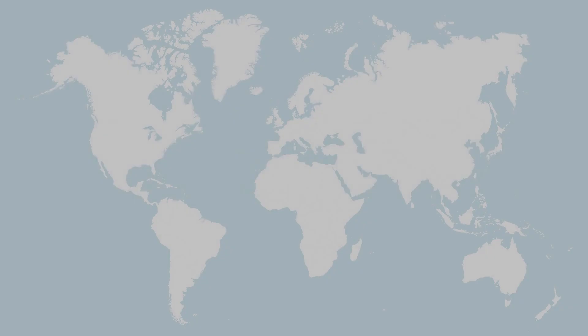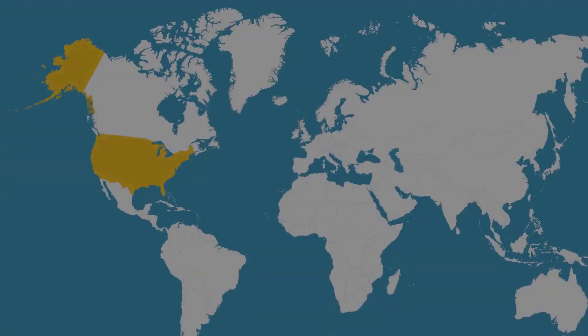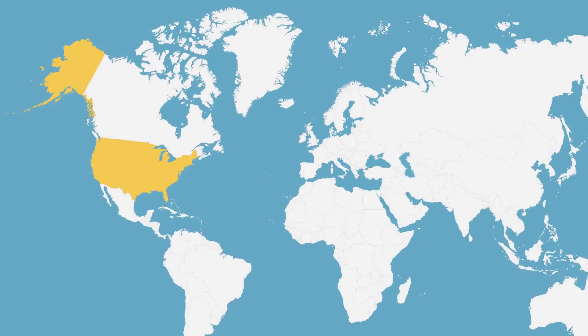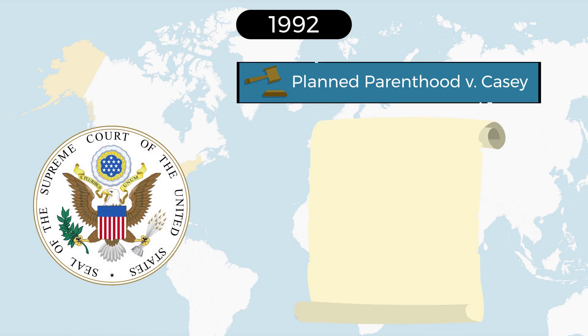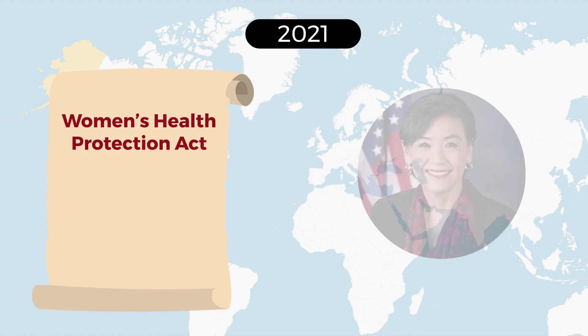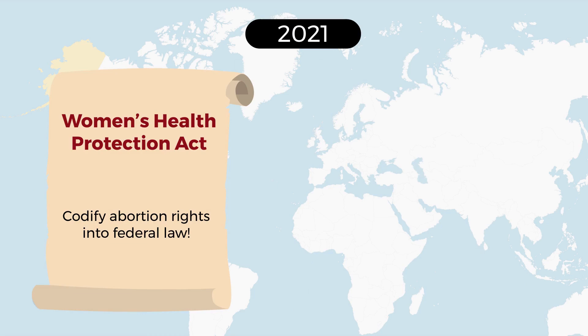Roe v. Wade overturned: in the 1992 Planned Parenthood v. Casey, the Supreme Court, while upholding the constitutional right to abortion, overturned the trimester framework and articulated an undue burden standard. In 2021, the Women's Health Protection Act was introduced by Congresswoman Judy Chu, aiming to codify abortion rights into federal law. However, the bill was passed in the House of Representatives but rejected by the Senate.